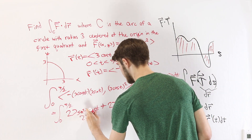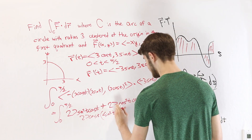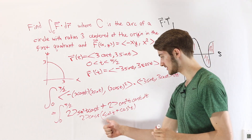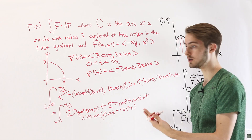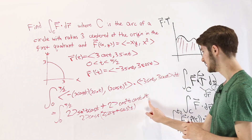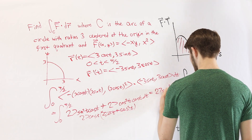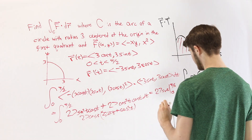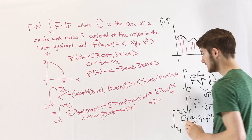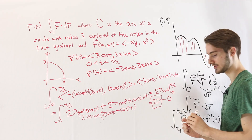After factoring, we get 27 cosine t times (sine squared t plus cosine squared t). Since sine squared t plus cosine squared t equals 1, that factor is not important. So we're just taking the integral of 27 cosine t dt. That means we get 27 sine t evaluated from 0 to pi over 2. The sine of pi over 2 is 1, giving us 27, and the sine of 0 is 0, giving us minus 0. So our answer is 27.